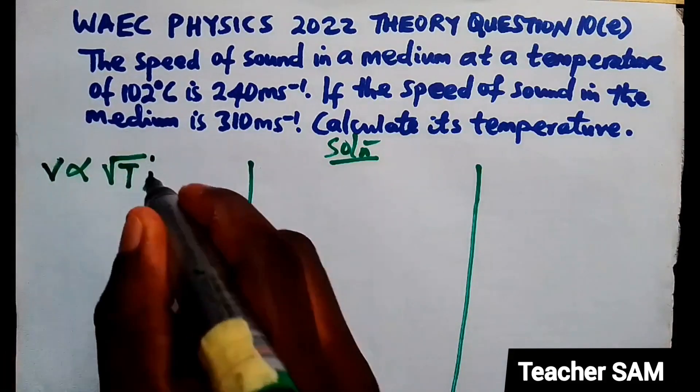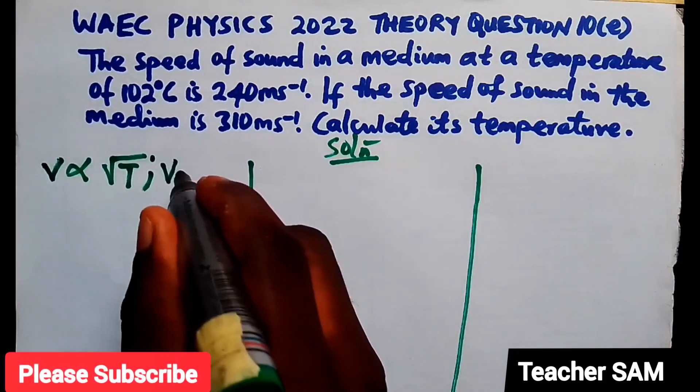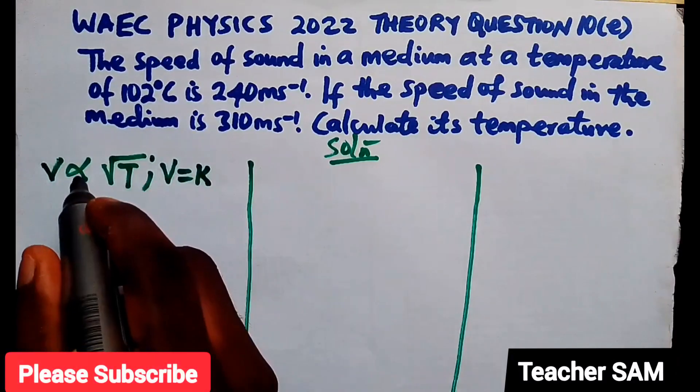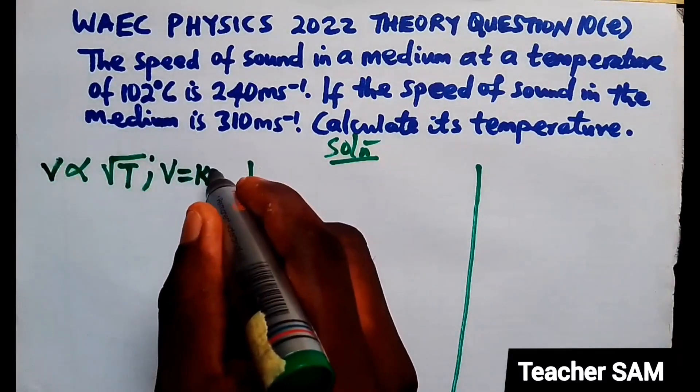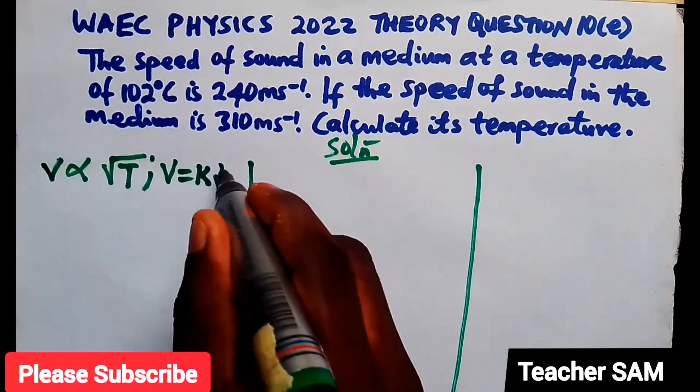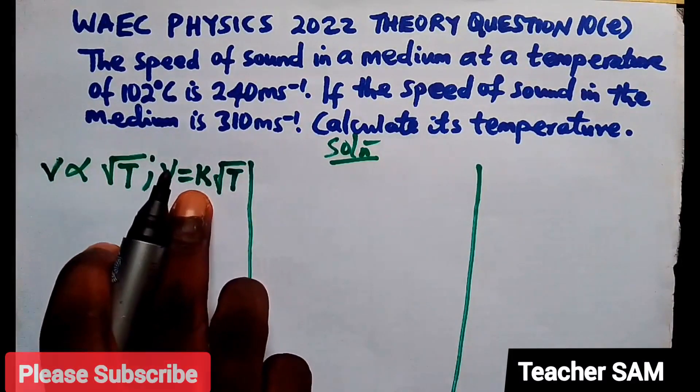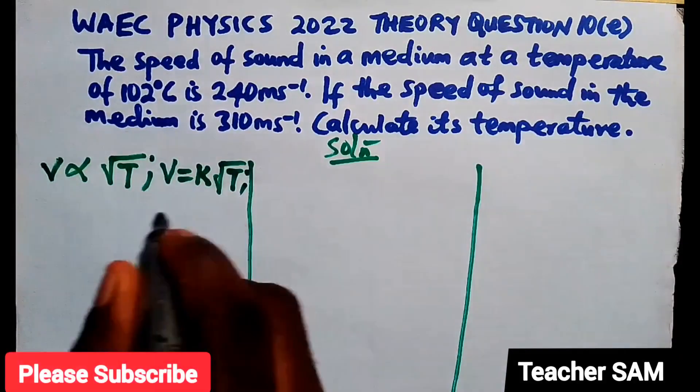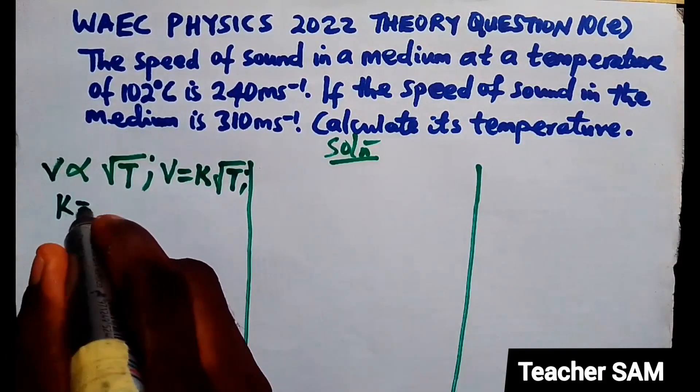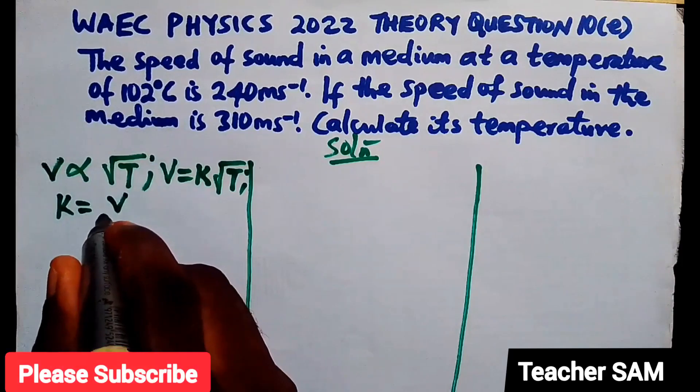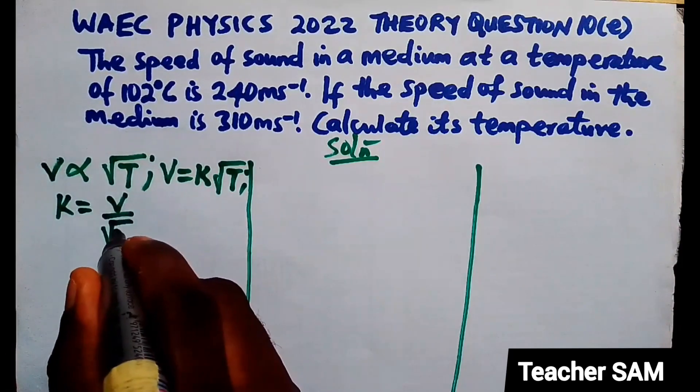Now, if this is true, we can say that our V will be equals to bringing in a proportionality constant K and that will be equals to K root of T. Now, if we make K the subject, we'll be having that our K will be equals to V all over square root of T.